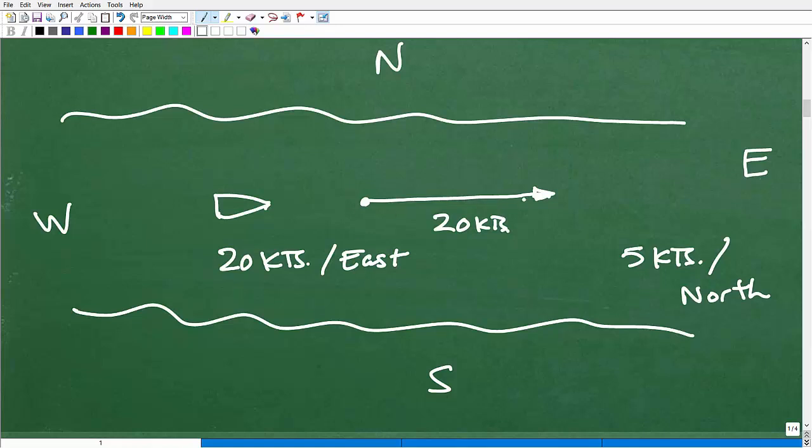Now, if this arrow's length represents 20, what do you think my arrow for my 5 knots is going to be? Well, it's going to be 1/4th. This will be like 5, 10, 15, 20. So my 5 knots arrow is only going to be like this long. And it's going to be going in what direction? It's going to be going north like this. So this could be my 5 knots vector. Again, it has a magnitude and direction.